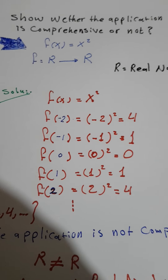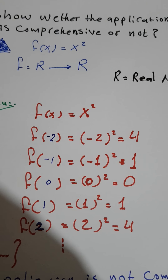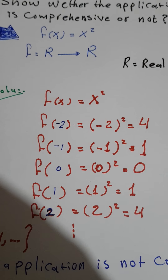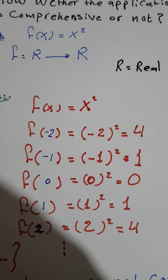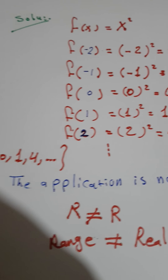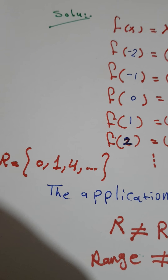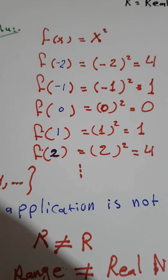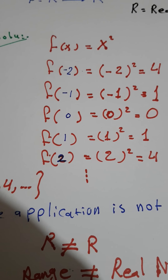You can see we computed these examples without brackets. Now we want to determine if the application is surjective or not. We look at the range. The range equals {0, 1, 4, ...} because any repeated values — we take only one occurrence in the range.